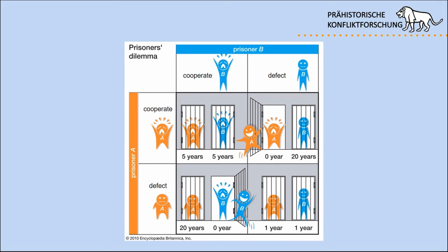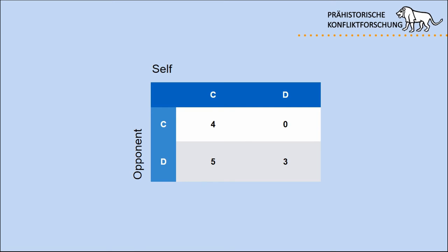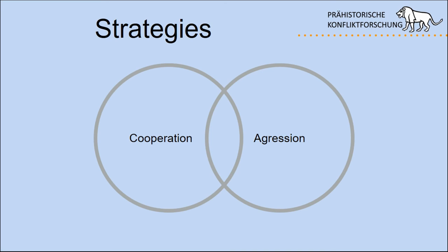We can put this in general terms as cooperate and defect. Whenever there's an interaction between humans, you act according to a payout matrix. If both players cooperate, they both receive a payout of four. If I cooperate and my opponent defects, I get nothing because he takes everything. If I defect my cooperating opponent, I take his gain and receive a higher payout. There are a variety of strategies applicable since we play this game over and over — some more cooperative, some more aggressive.